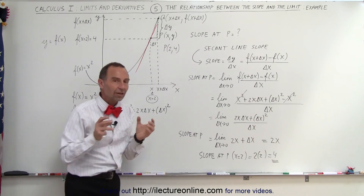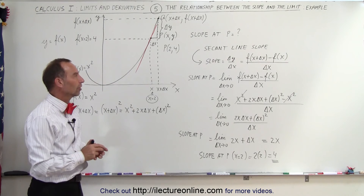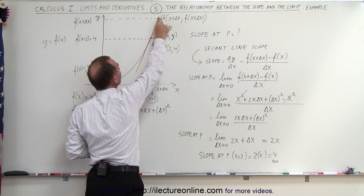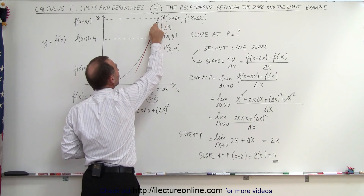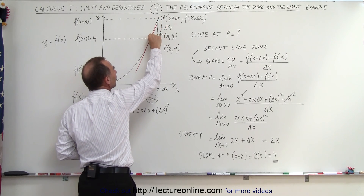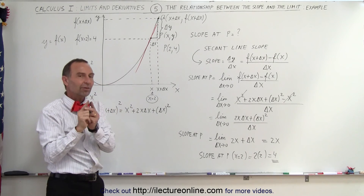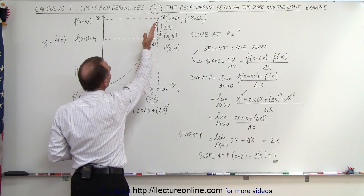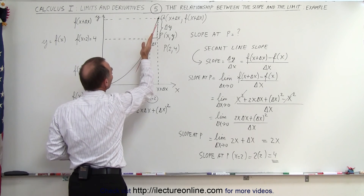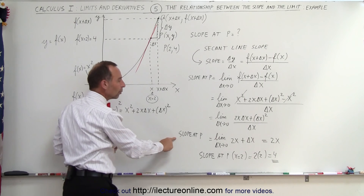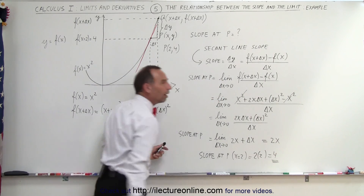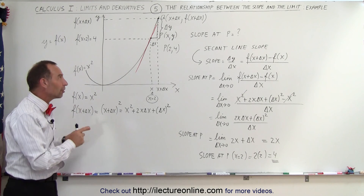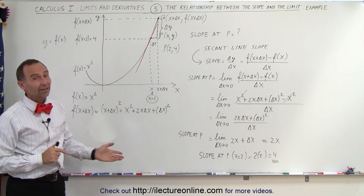That's what we mean by the concept of the limit in calculus. We take point Q and move it closer and closer to point P so that when the distance between them becomes instantaneously small — when delta x goes to 0 — the slope of the secant line between Q and P exactly equals the slope of the tangent line. When it does, we can find the exact slope of the tangent line at point P, which is therefore the exact slope of the function at point P. And that's how it's done.